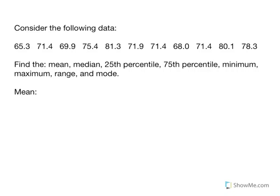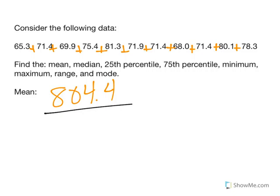We will start with the mean. The mean is the average of the data points. So to find that, we are going to add all 11 points together. And when we add those up, the sum comes out to be 804.4. Now, to find the average, we would say...